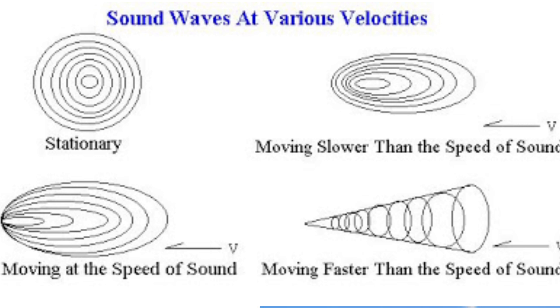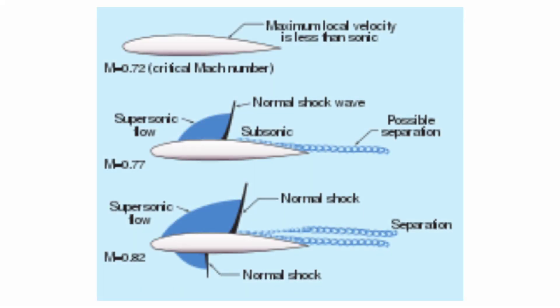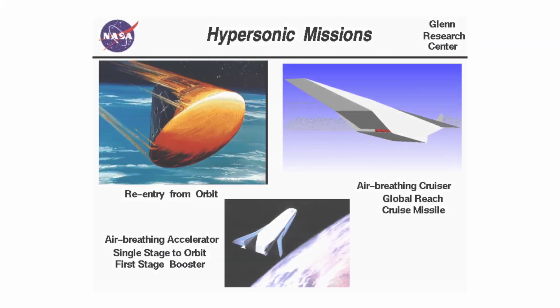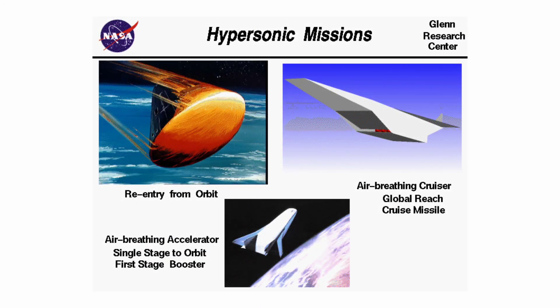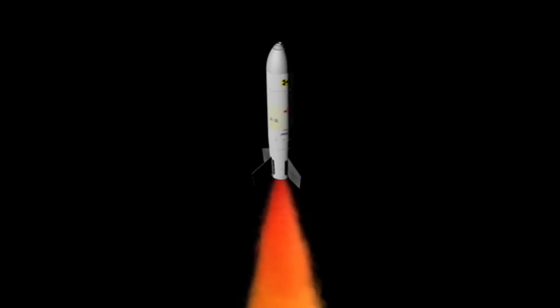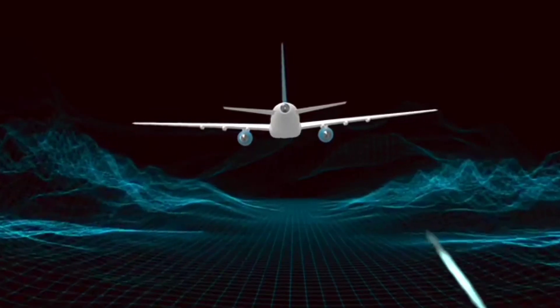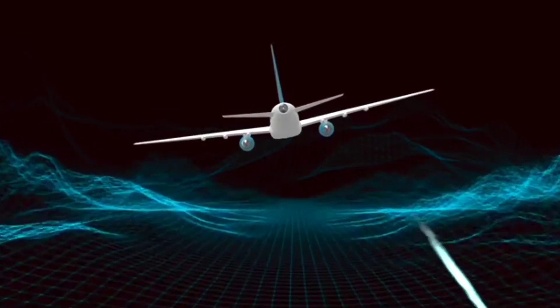Objects with speeds about the speed of sound are called transonic. Objects with speeds greater than Mach 5 are called hypersonic. There are many missiles and fighter jets, especially fighter planes, which can go up to Mach 5.